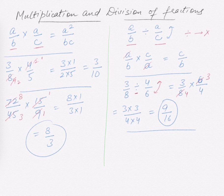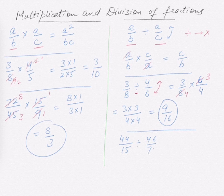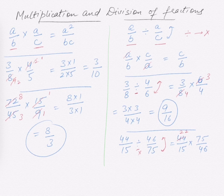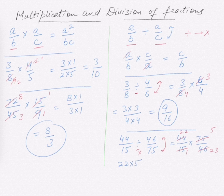So the answer is 8 divided by 3. Similarly for division: take 44/15 divided by 46/75. Change divide to multiply and reverse the term — 75 goes to the top and 46 to the bottom — giving 44/15 times 75/46. Cancel with the table of 2: 44 becomes 22, 46 becomes 23; and 15 ones are 15, 15 fives are 75, so 75 becomes 5. What's left is 22 times 5 over 1 times 23, which equals 110/23.